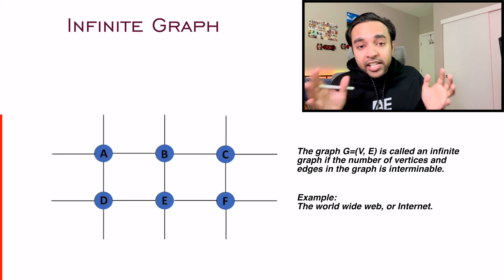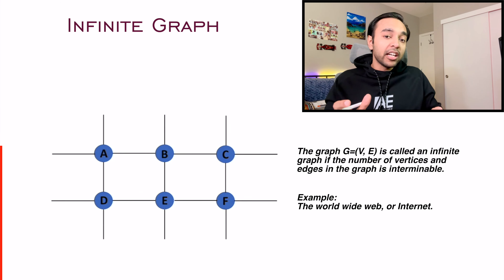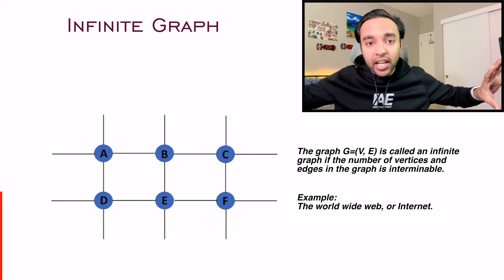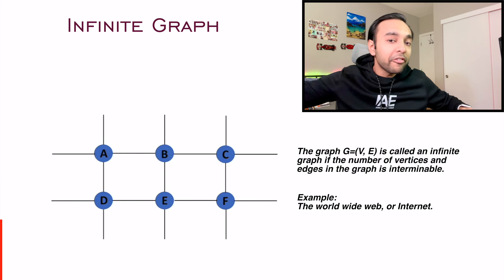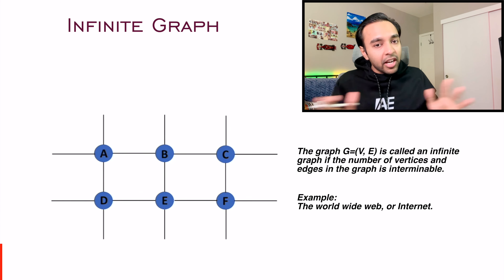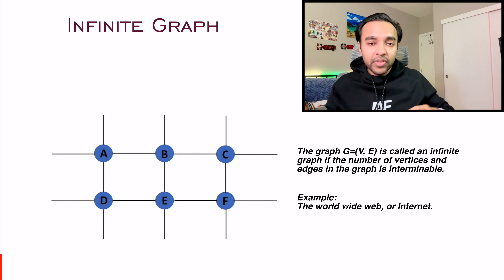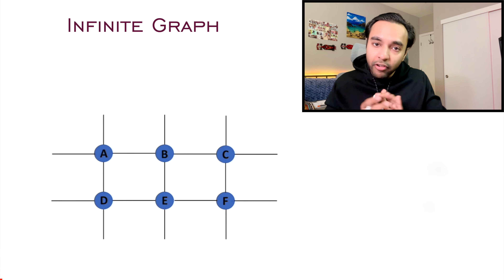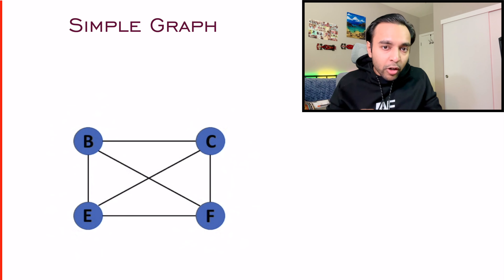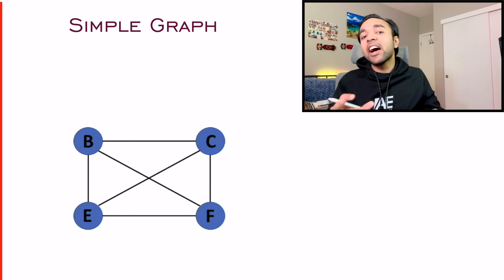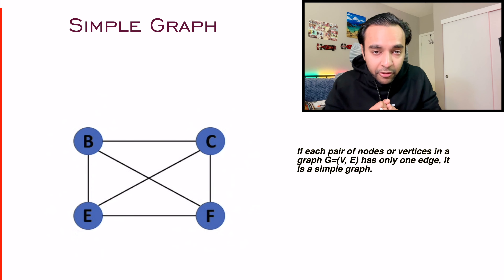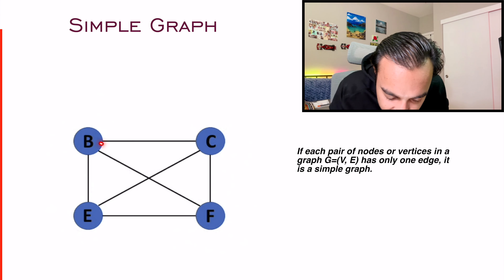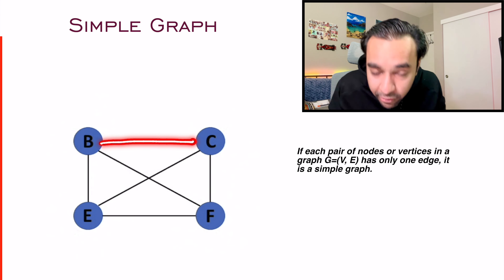The next thing is an infinite graph. An infinite graph simply means there is no limit on the number of nodes you can have. One example is the World Wide Web or the internet. You can keep on adding nodes — there can be new websites every day and this graph never ends. This graph will keep on growing, and that is why we call it an infinite graph.